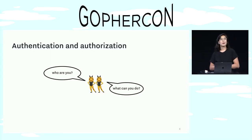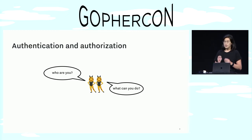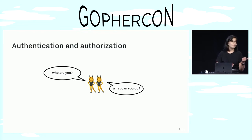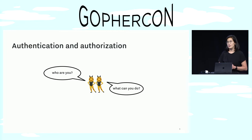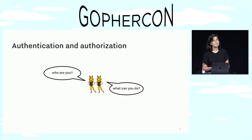To begin, let's talk about a common problem when building services, which is auth. And when I say auth, I really mean the twin problems of authentication — who you are — and authorization — or what you can do. And between these two questions, you should be able to determine if a given action is allowed.